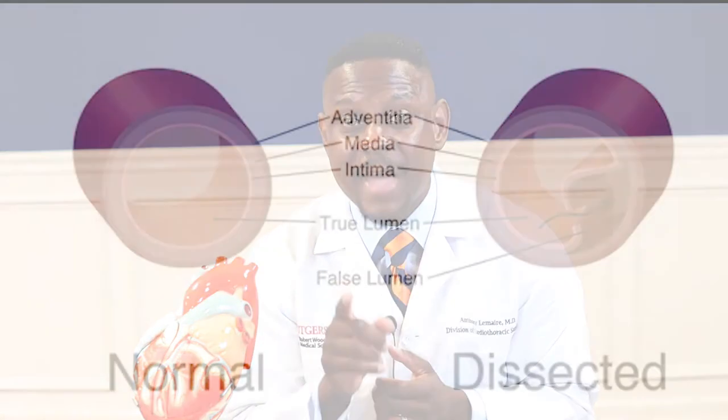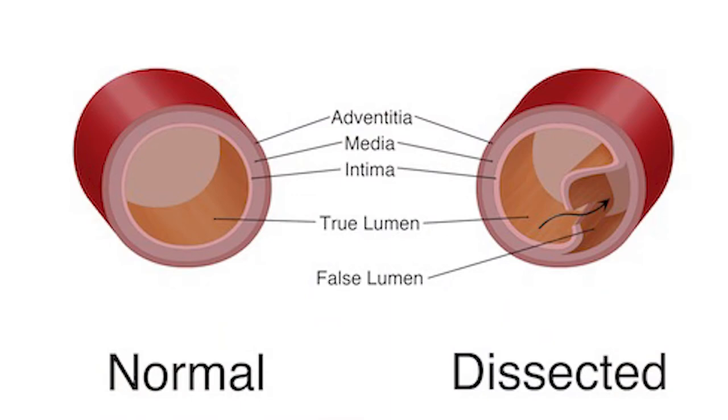A dissection of the aorta essentially means there's a tear in the innermost wall — the intima — of the aorta. When that happens, it's a surgical emergency. Blood gets inside and tears through, going in between the layers of the aorta, which can lead to a rupture.